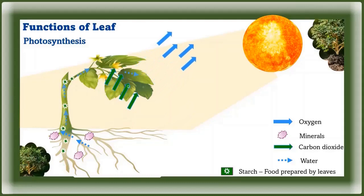Leaves use water, air, and sunlight in the presence of a green substance called chlorophyll. This chlorophyll catches the sunlight to make food. Leaves get water from the roots through the stem, and take carbon dioxide from the air. Using carbon dioxide, water, and sunlight, leaves prepare food for the plant — this process is called photosynthesis. So leaves are called the kitchen or food factory of the plant.